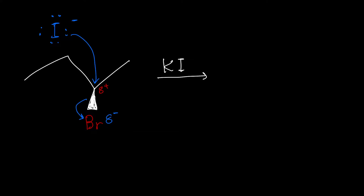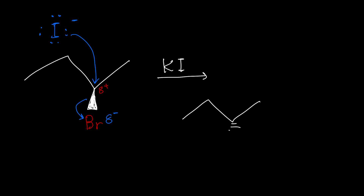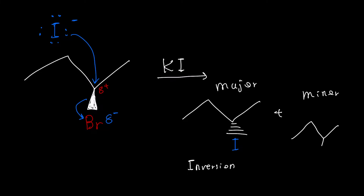So at the end, what you have is iodine replacing the bromine. However, notice that we have a wedge attached to the bromine, which means that the bromine is coming out of the page. The iodine is going to want to attack the carbon from the opposite direction from the bromine. Therefore, the major product in this reaction is going to be iodine on the dash, as opposed to the wedge. This is called an inversion because it's the reverse of what was there before. The minor product is going to be the retention product, where you had a wedge before and still have a wedge.